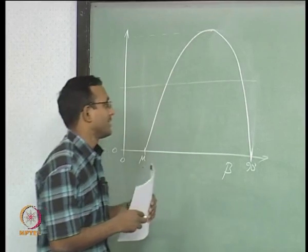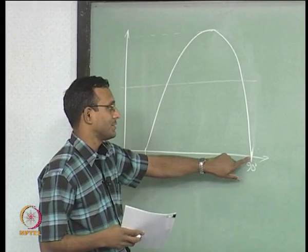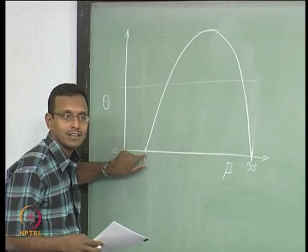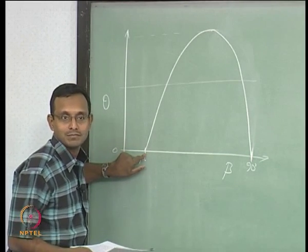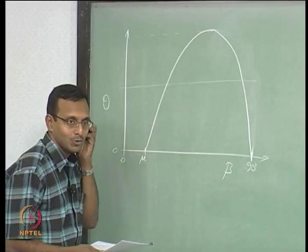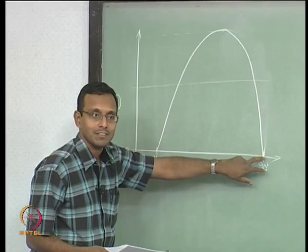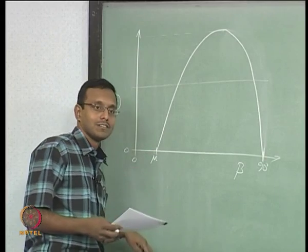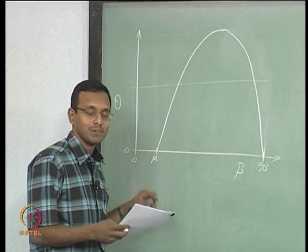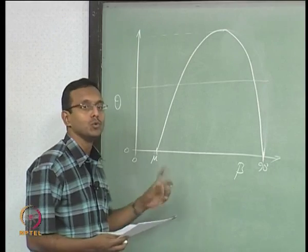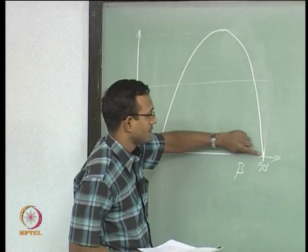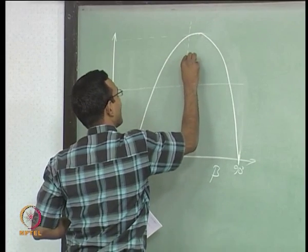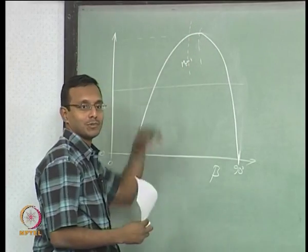M1 normal starts very high (equal to M1 at the centerline where beta = 90°) and goes all the way down to M1 normal = 1 far out where sin beta equals 1/M1. For M2, the Mach number behind the shock, it starts with very low subsonic near the centerline, increases, reaches M2 = 1 at a particular beta value, then becomes supersonic and finally reaches M2 = M1 far out where there is no change — that is a Mach wave.